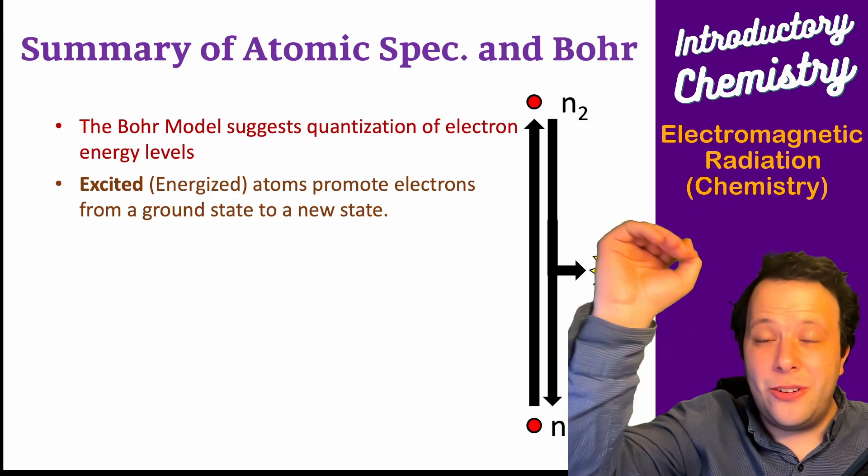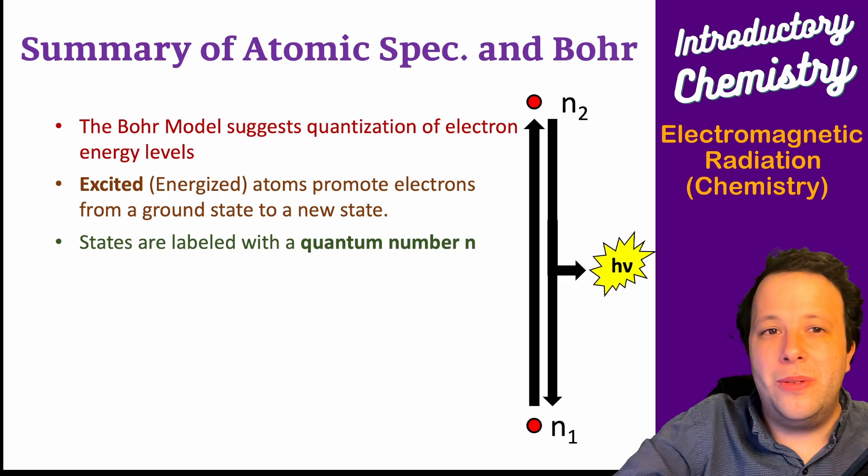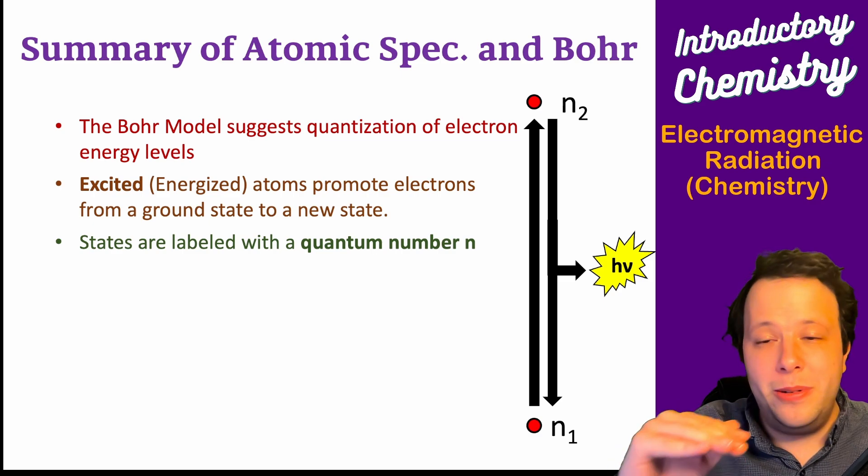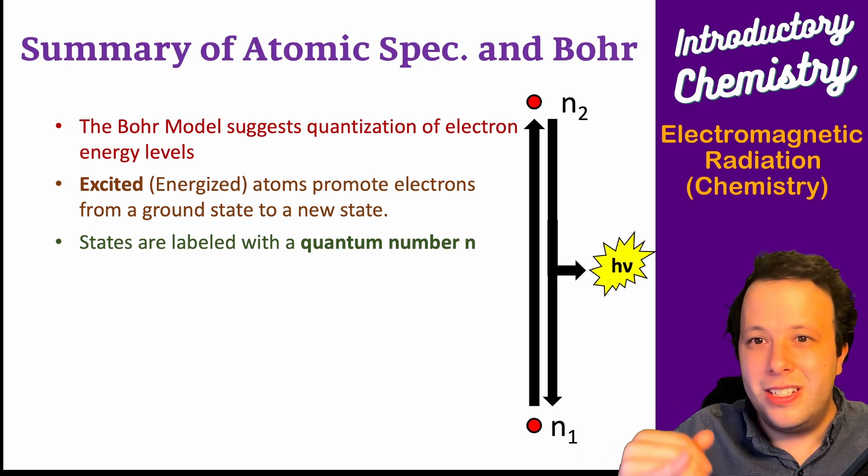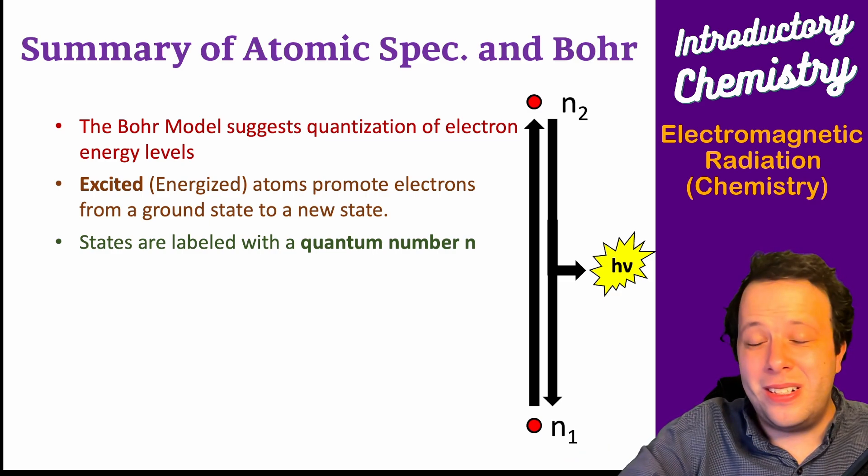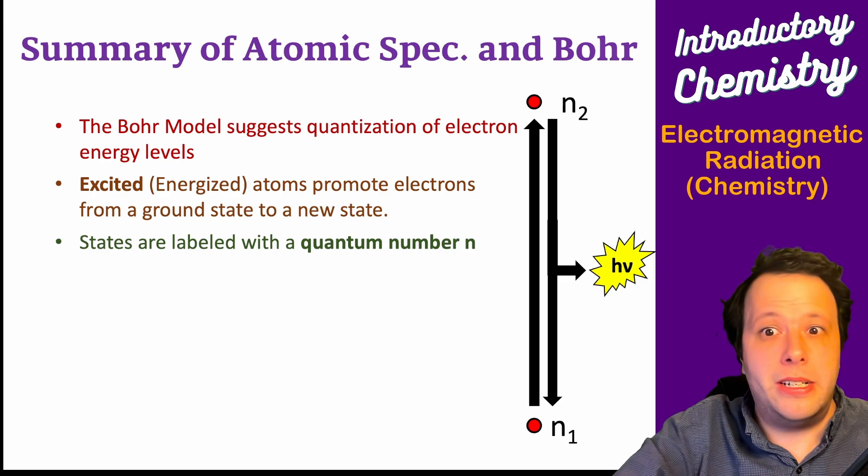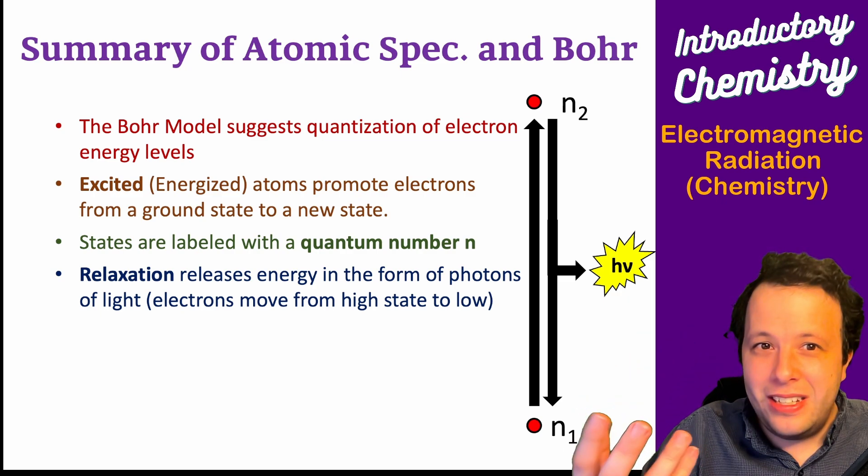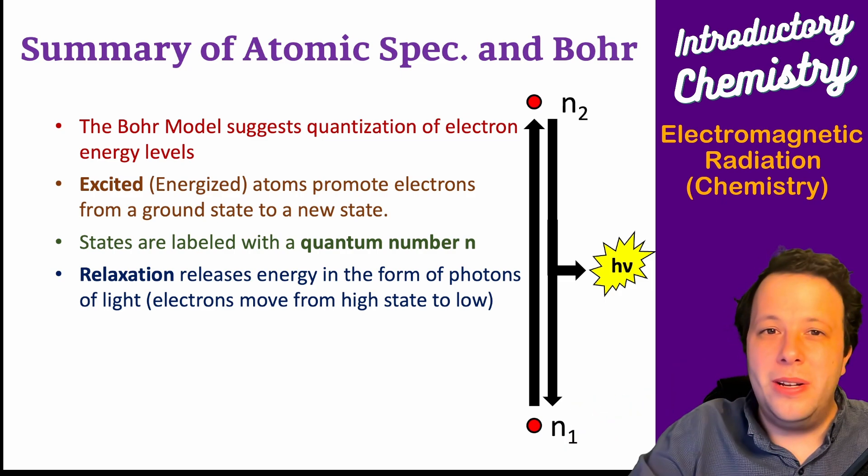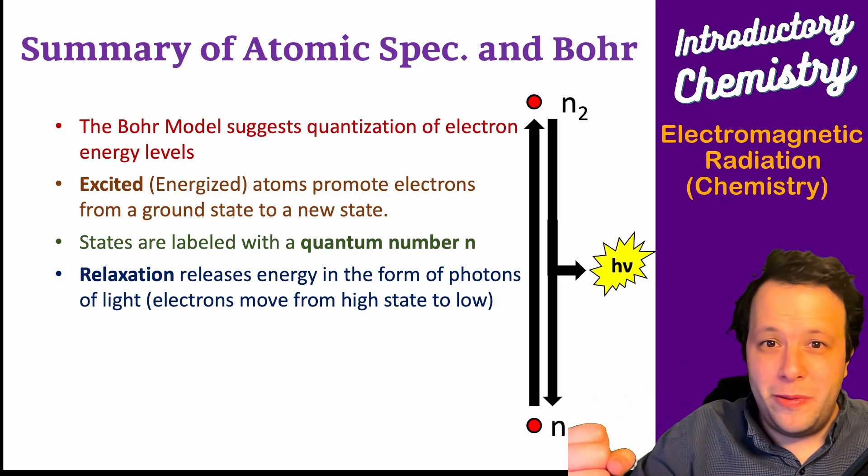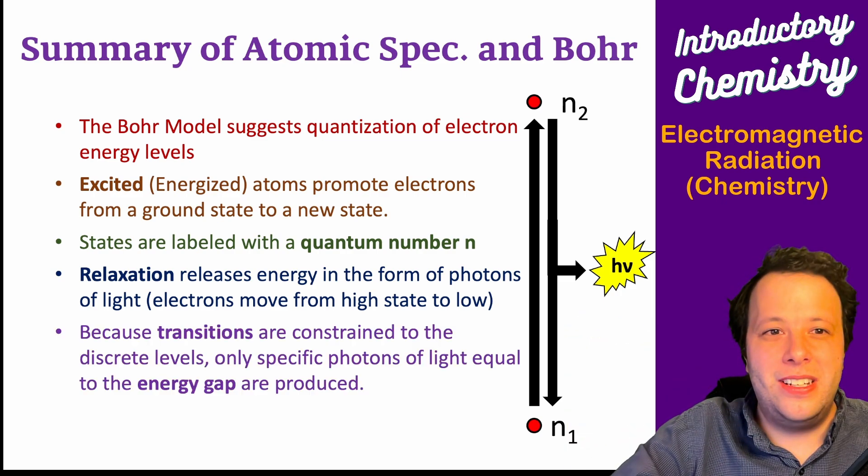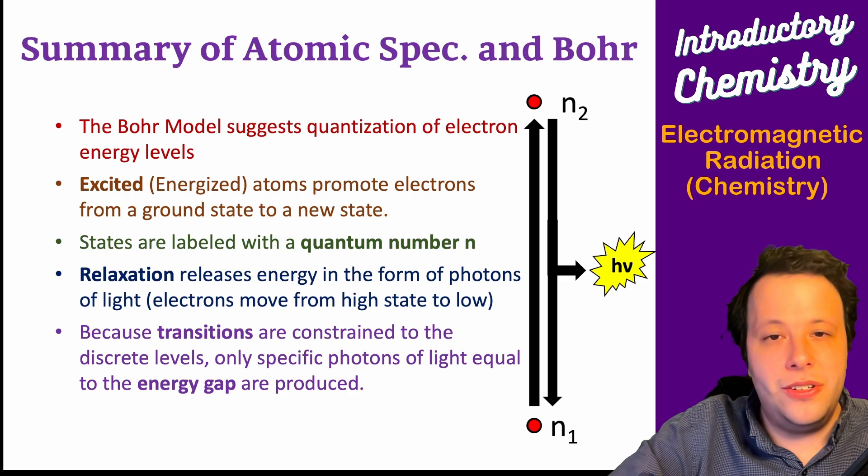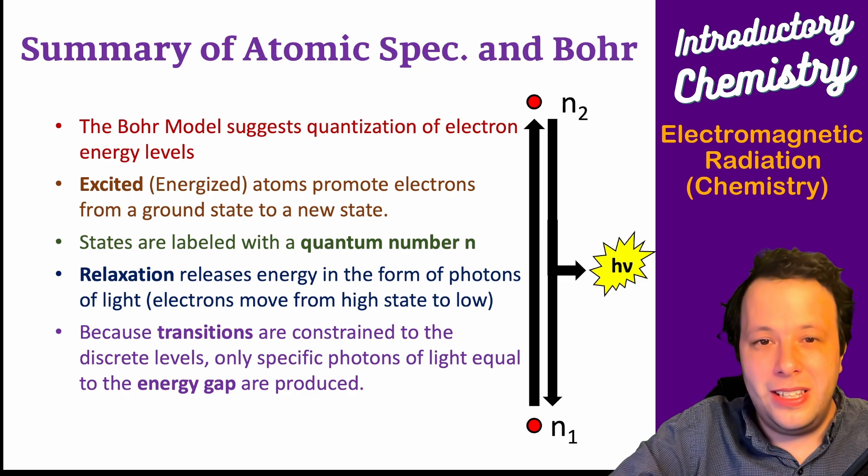We label all these with quantum numbers, which is useful. All the rows on your periodic table are your quantum numbers from 1 to 7 for first semester. When it relaxes back down, this is going to release energy in the form of a photon that can be observed. You can either absorb a photon or release one through relaxation, and these transitions equal a very specific amount of energy that can be calculated.